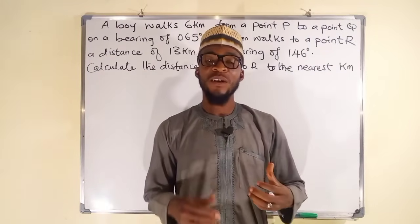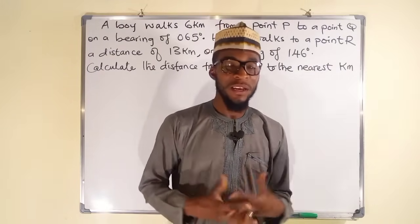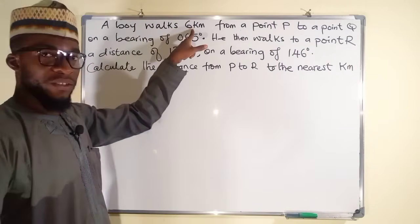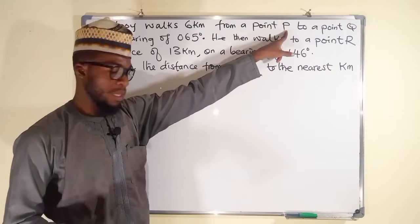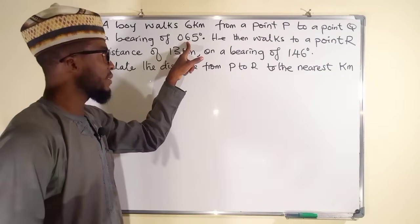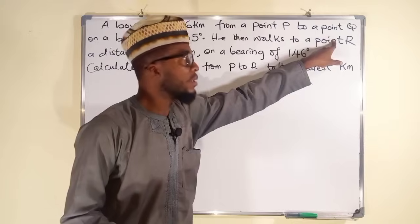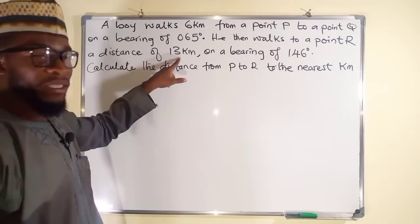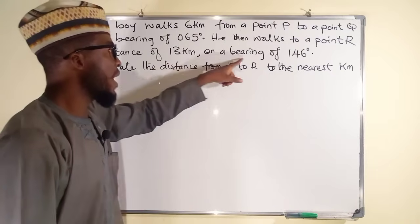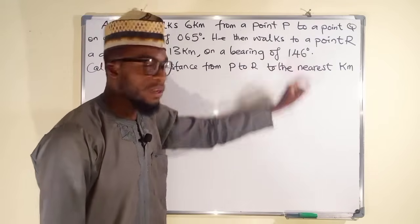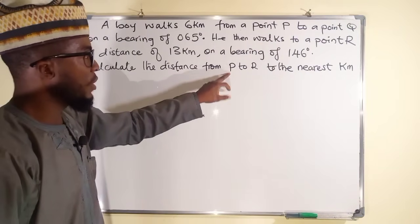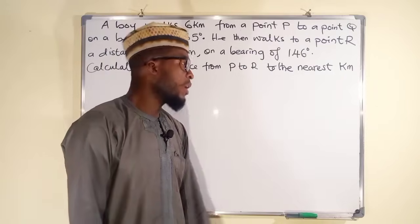Hello, good morning viewers. Here is our first problem on true bearing. A boy walks six kilometers from a point P to a point Q on a bearing of 65 degrees. He then walks to a point R — the distance from Q to R is 13 kilometers — on a bearing of 146 degrees. We are asked to calculate the distance from P to R to the nearest kilometer.